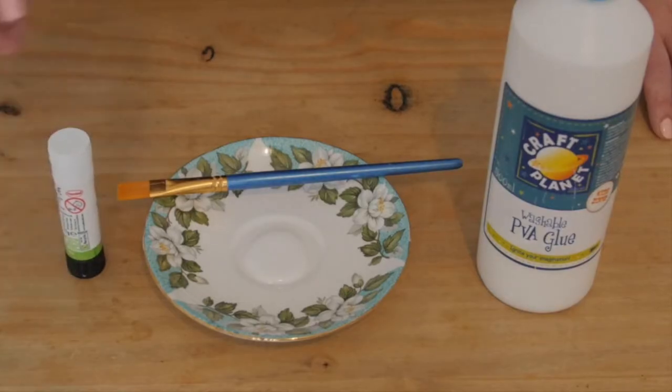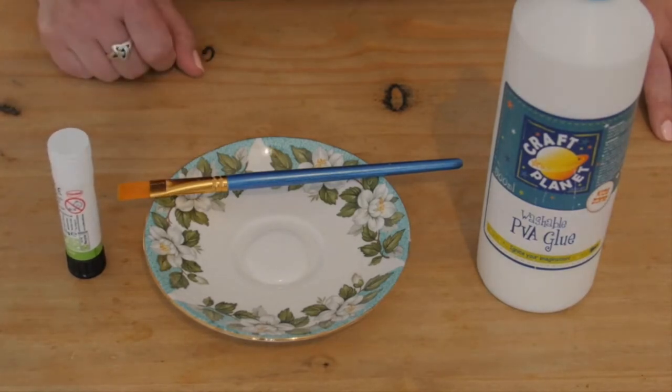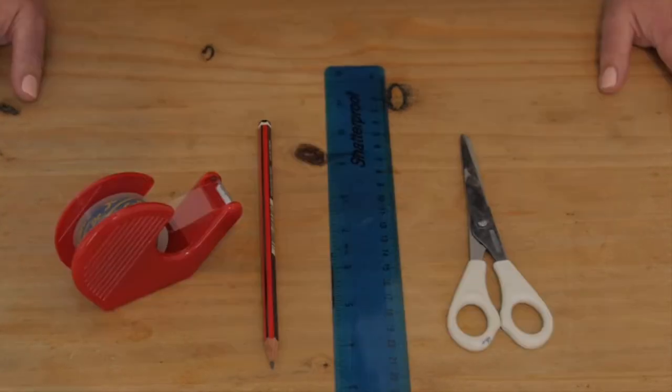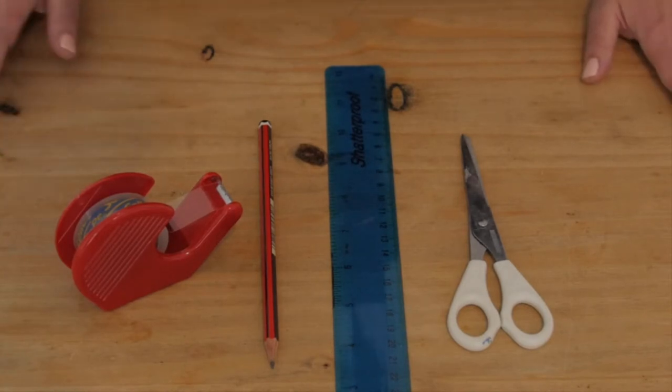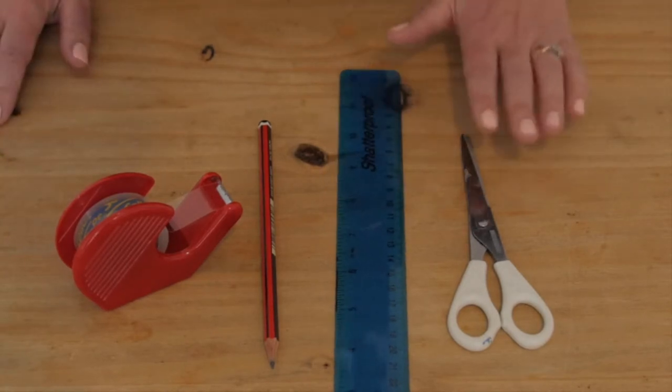You will need a glue stick and I have also got some PVA glue and a paint brush to help with the decorating. And finally some sticky tape, a pencil, a ruler and some scissors.